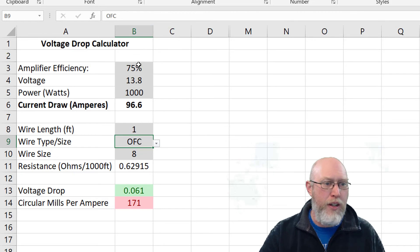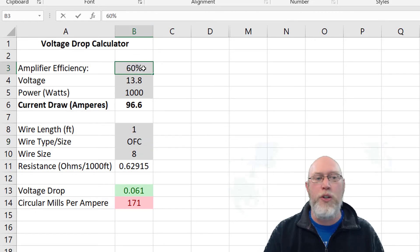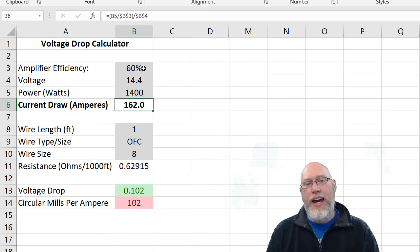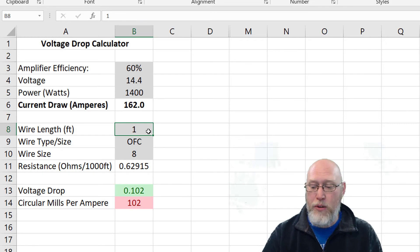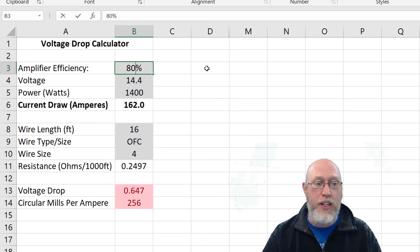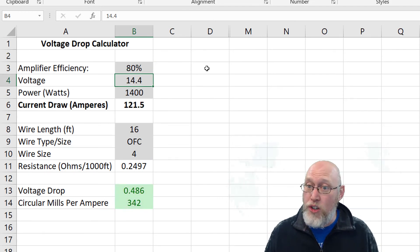Let's look at a couple other examples. Let's say that I had a class AB amplifier that was only 60% efficient, but I had a healthy charging system of 14.4 volts, and I was running 1400 watts of total power. Well that is going to draw 162 amps. So my main power wire needs to be able to handle 162 amps. And let's say it's going to be a nice healthy run of wire of 16 feet, and I want to use 4 gauge wire. And there we see 4 gauge wire isn't going to do the job. I'm going to need a lot bigger wire, or I'm going to need a more efficient amplifier. So if my efficiency were 80%, you can see that it's going to work just fine. So the amplifier efficiency is very important. It's all kind of tied together.